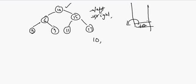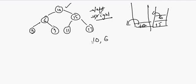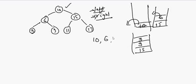We push 15 and then 6. We pop 6 and print it. Then we push the right child of 6, which is 9, and the left child of 6, which is 3. We pop 3, which has no left or right child, then pop 9, which also has no children. Then we pop 15, which has something on the left and something on the right.